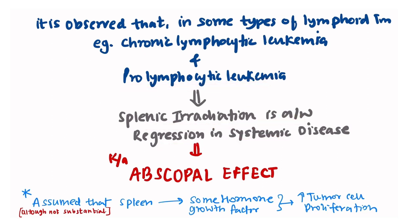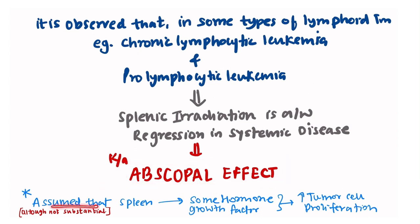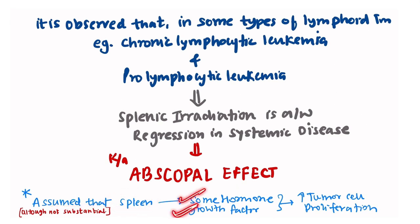This regression of systemic disease following splenic irradiation is known as the abscopal effect. It is assumed that the spleen secretes hormones and growth factors which increase tumor cell proliferation, and by removing the spleen there is a decrease in such hormones and growth factors, leading to tumor regression — although the theory behind this abscopal effect is not yet substantial.